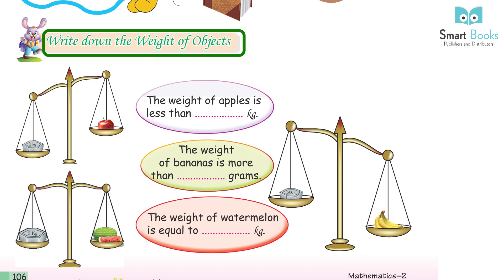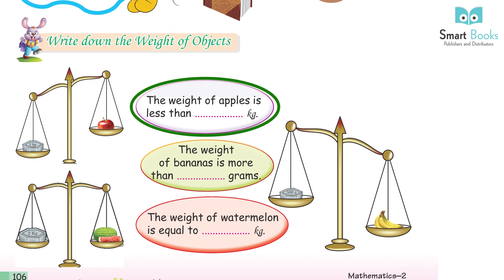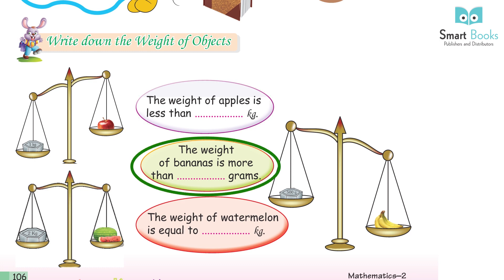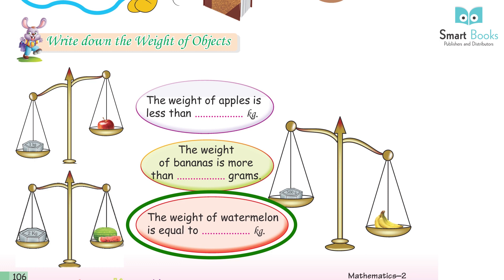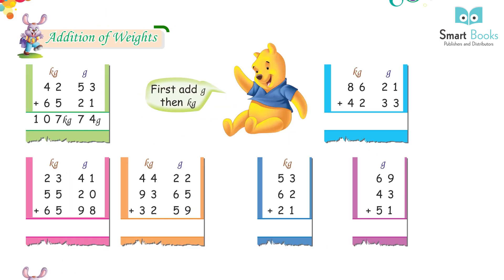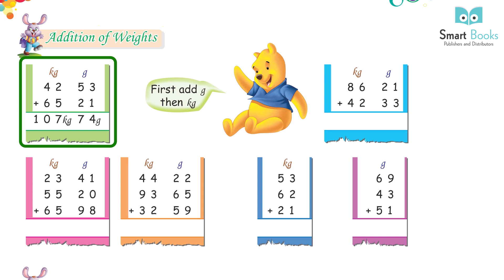Write down the weight of objects. The weight of apple is less than ___ kilograms. The weight of bananas is more than ___ grams. The weight of watermelon is equal to ___ grams. Addition of weights: 42 kg 53 g + 65 kg 21 g = 107 kg 74 g.